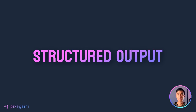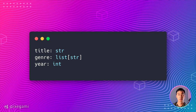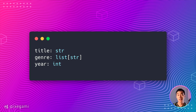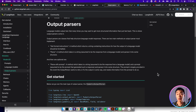But what if you wanted to have structured output as well? For example, let's say you're building an AI app for movie recommendations and your requirement is that all movies have a title, a genre and a year of release. How do you guarantee that the LLM always gives you information in this structure? To solve this problem, Langchain has something called output parsers. Let me show you how that works.